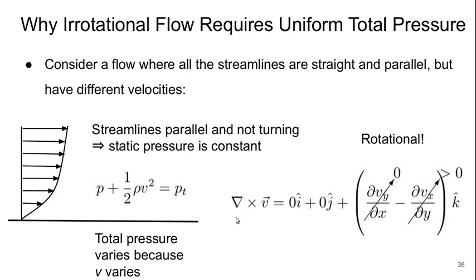Then, if we look at the curl of the velocity, the K or Z component, right, dVY dVX is zero, but dVX dY, the gradient of the X velocity as we move in the Y direction, which is up and down here, is positive. So, the curl is not zero, and the flow is rotational.